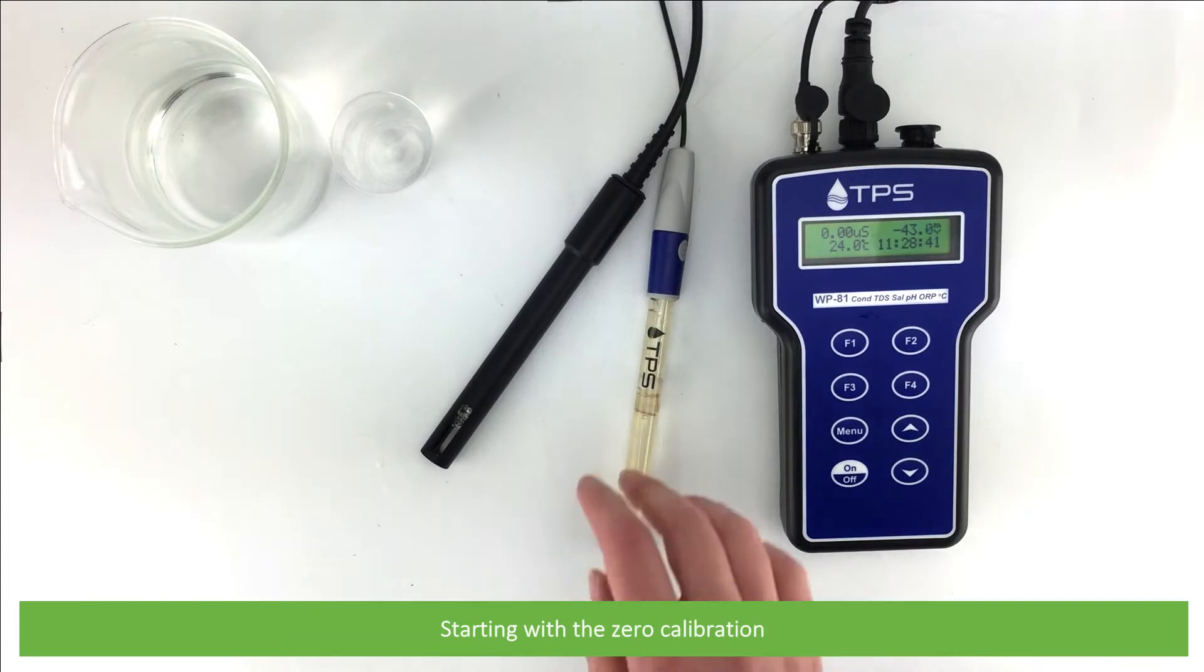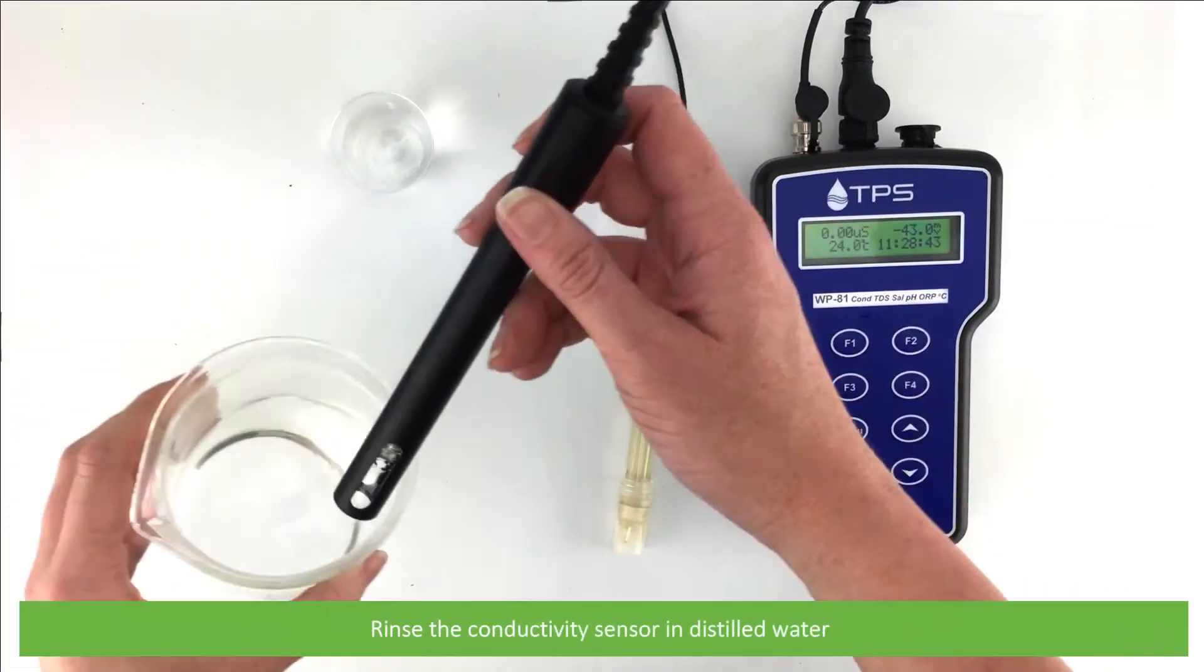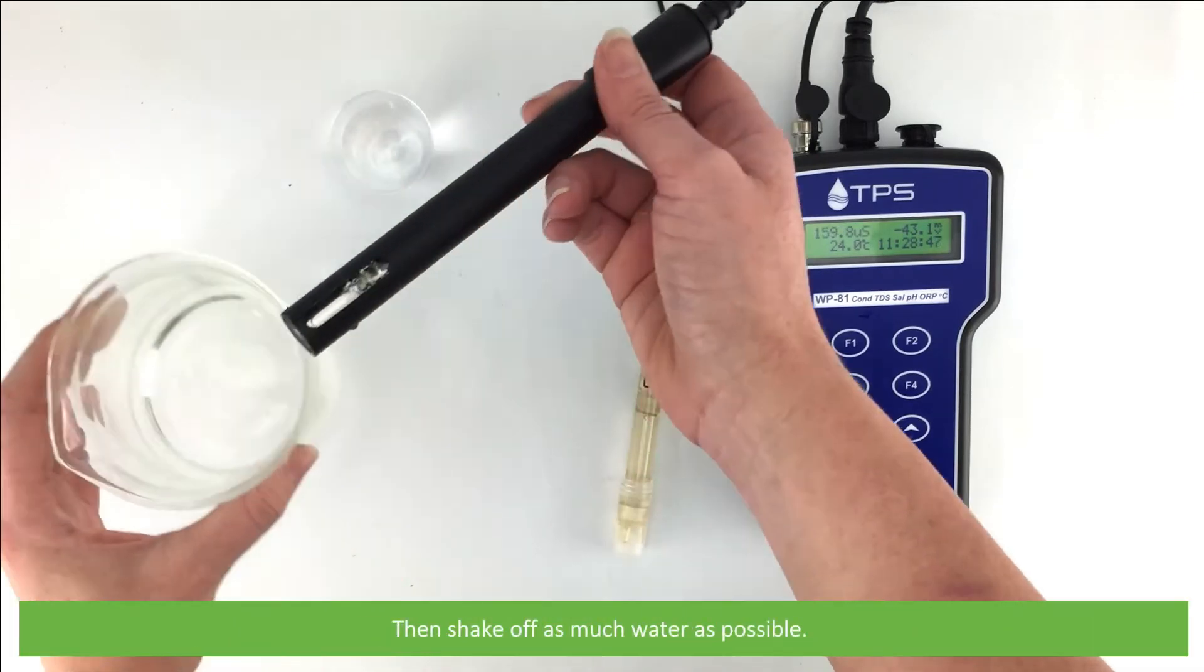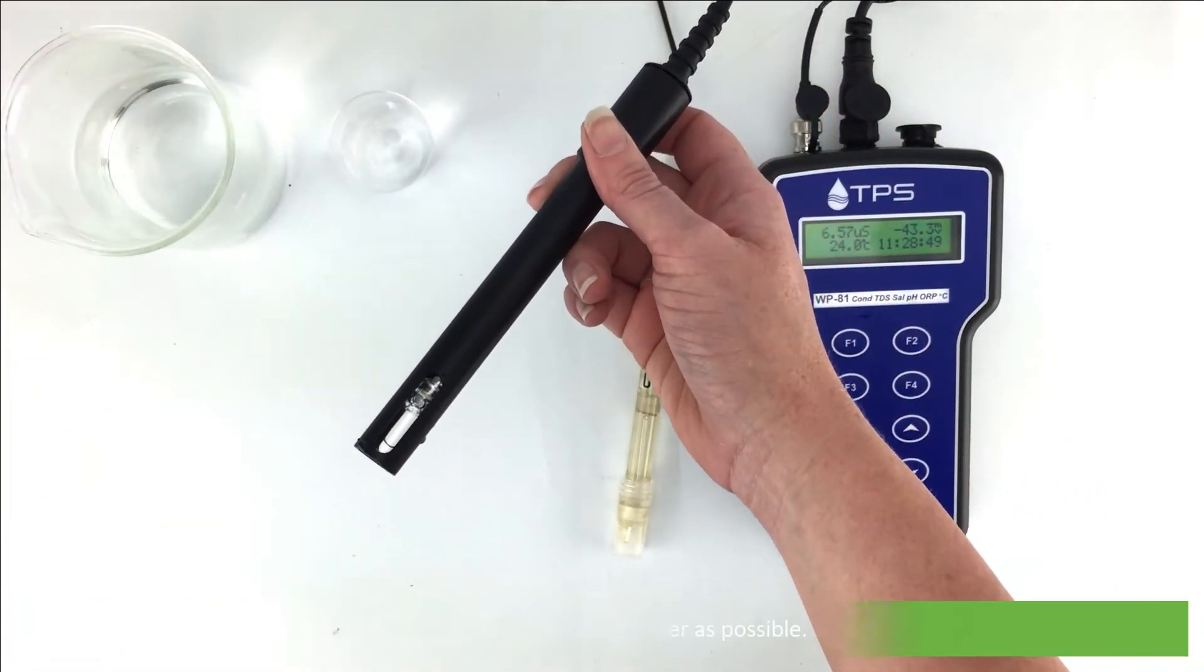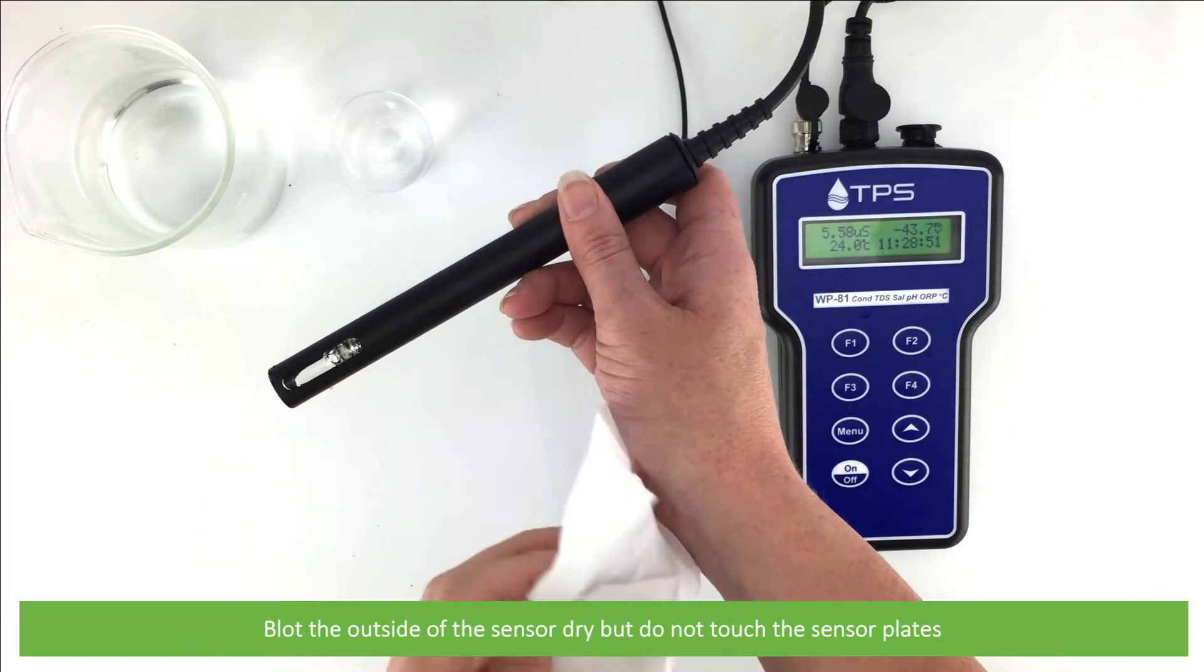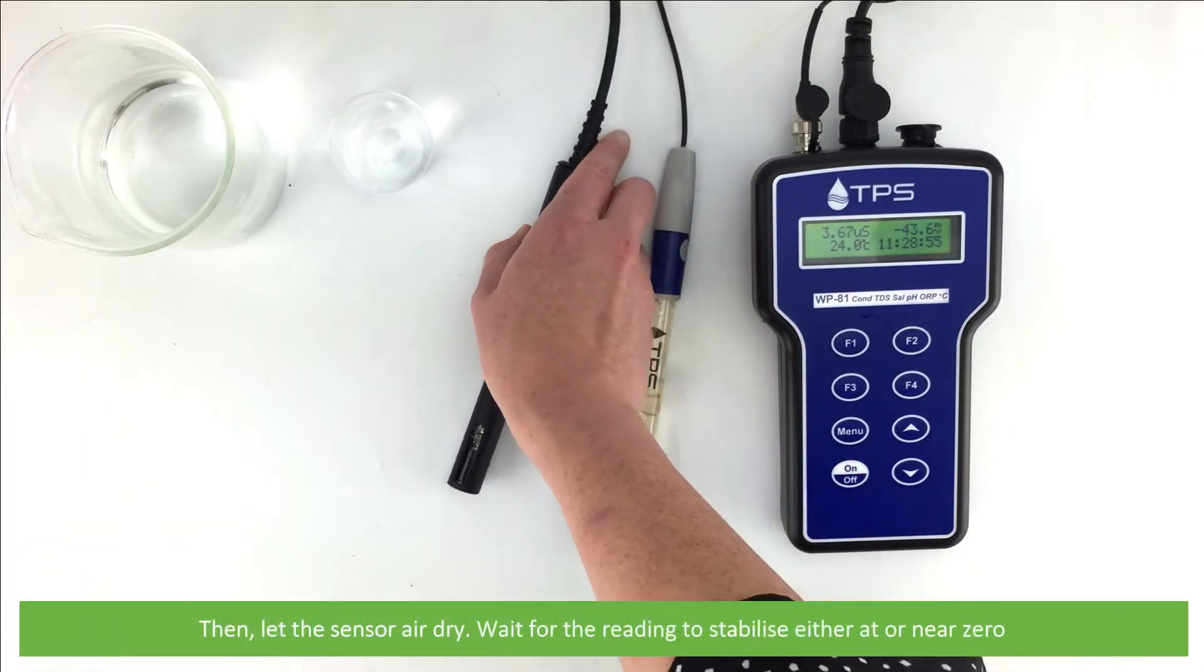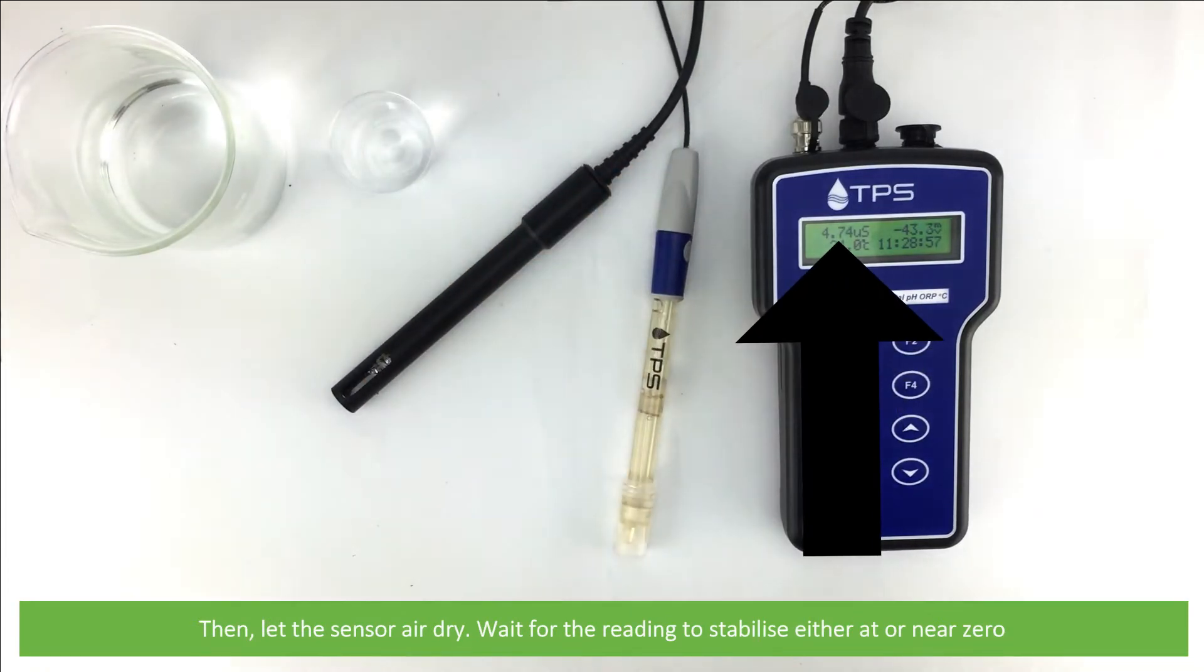Starting with the zero calibration. Rinse the conductivity sensor in distilled water, then shake off as much water as possible. Blot the outside of the sensor dry but do not touch the sensor plates. Then let the sensor air dry. Wait for the reading to stabilize either at or near zero.